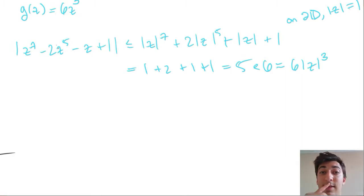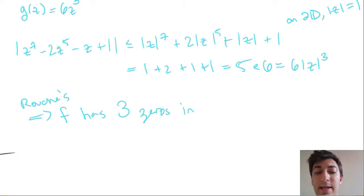And that means that the conclusion of Rouche's theorem tells us the following: that f, our original polynomial, has three zeros inside the boundary of the disk. But this, we just know, is the disk itself, and so we've answered our question.